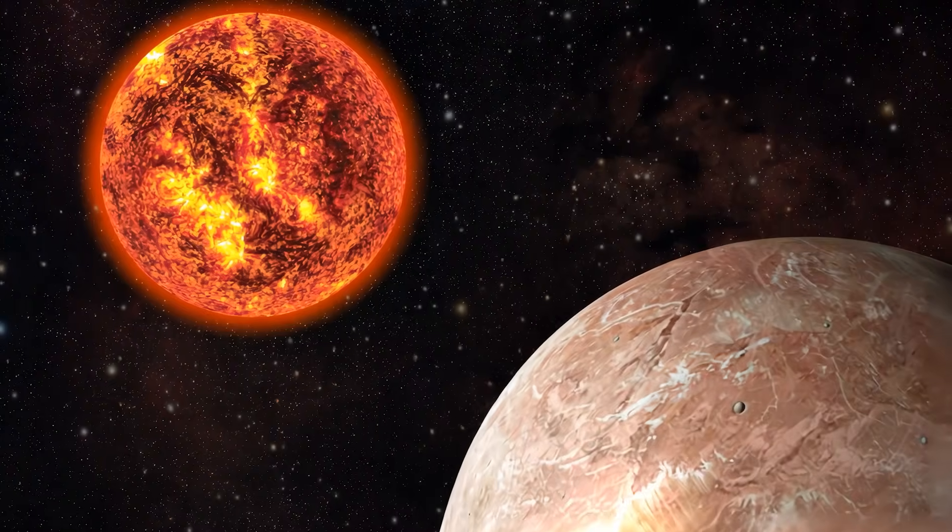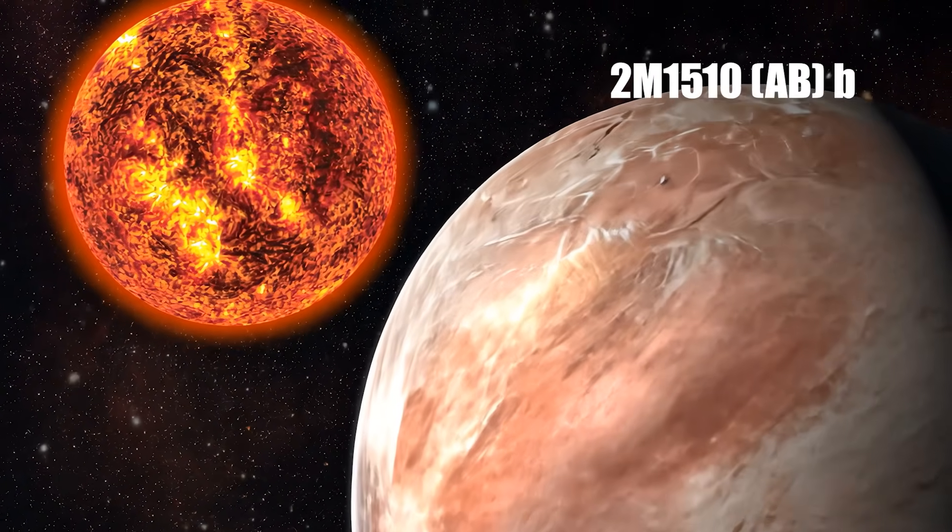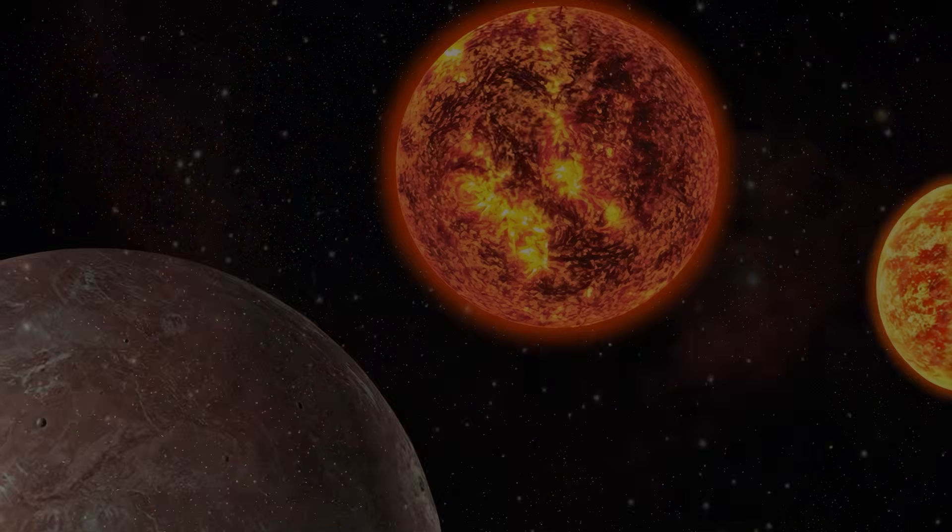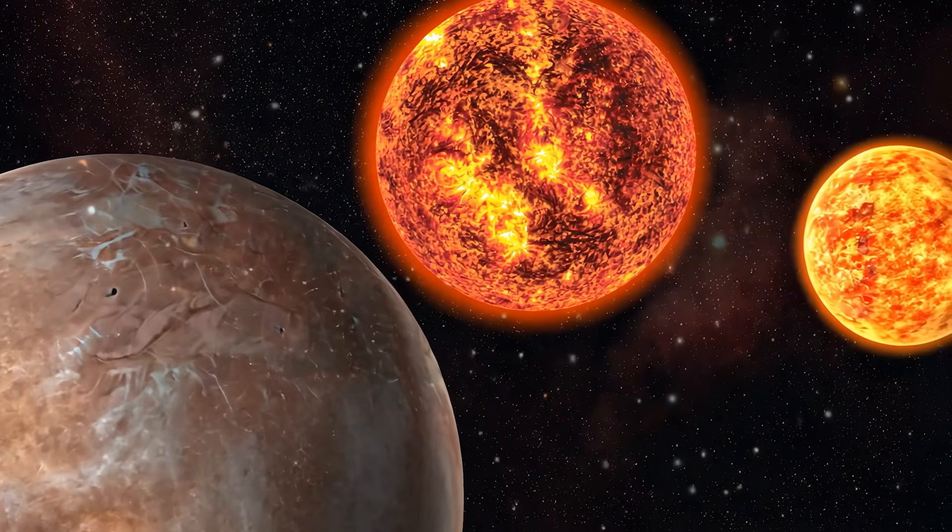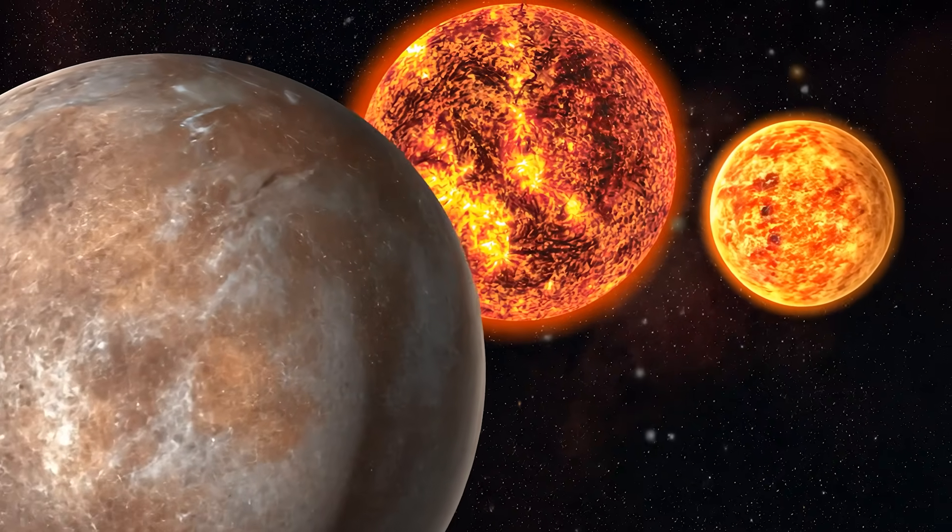The brown dwarfs, named 2M1510AB, weren't behaving as expected. Their orbital paths show subtle irregularities that could only be explained by the gravitational influence of an unseen third body.